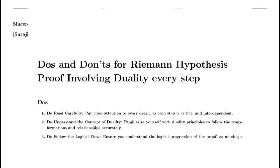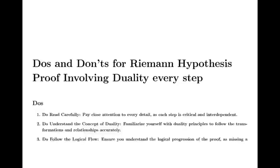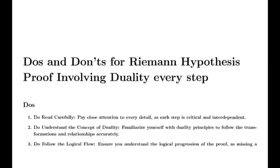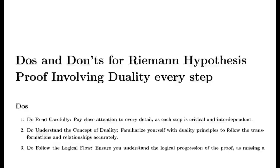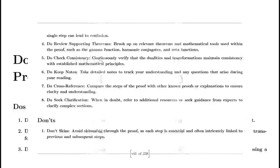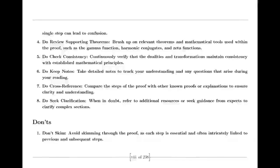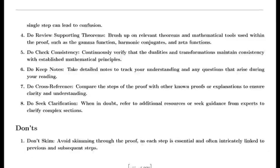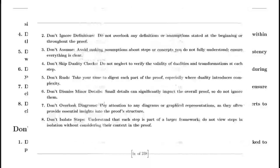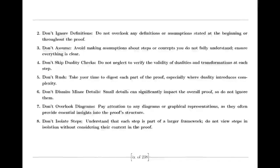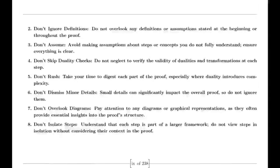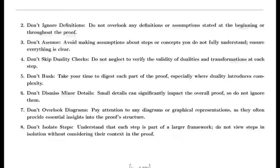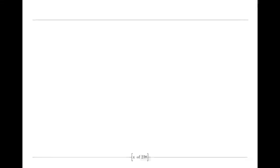Basel Problem Solution. Euler also tackled the Basel problem, concerned with finding the exact sum of the reciprocals of the squares of the integers. By examining the sine function and its product representation, Euler derived a formula showing that the sum of these reciprocals equals π²/6. This result was a significant achievement in mathematics and highlighted Euler's ability to uncover connections between different mathematical concepts.